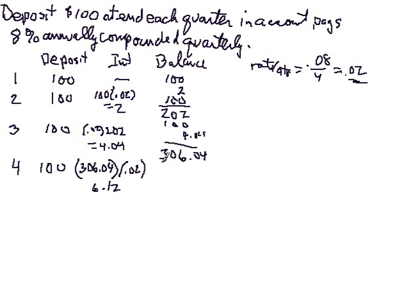So what's our balance become? We add the interest here. And then we've got this extra $100, the $100 that we deposit at the end. So what do we come out with? We come out with $412.16.